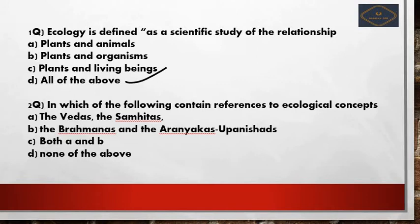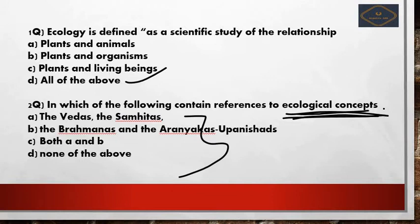Second question: In which of the following does one find a reference to the ecological concept? Option A: the Vedas and Samhitas. Option B: the Brahmanas and the Aranyakas/Upanishads. Option C: both A and B. Option D: none of the above. The correct answer is option C — both A and B.